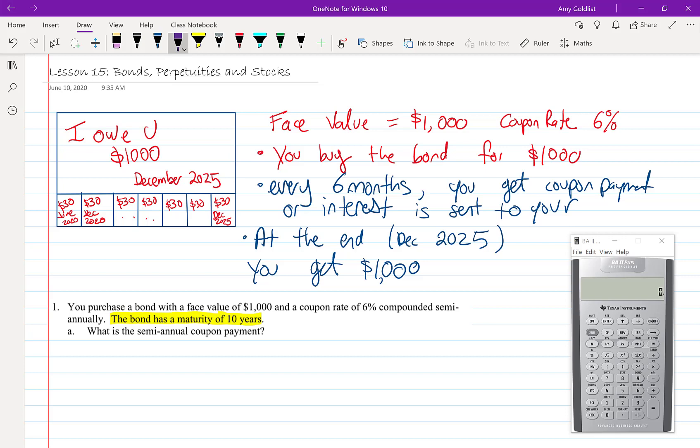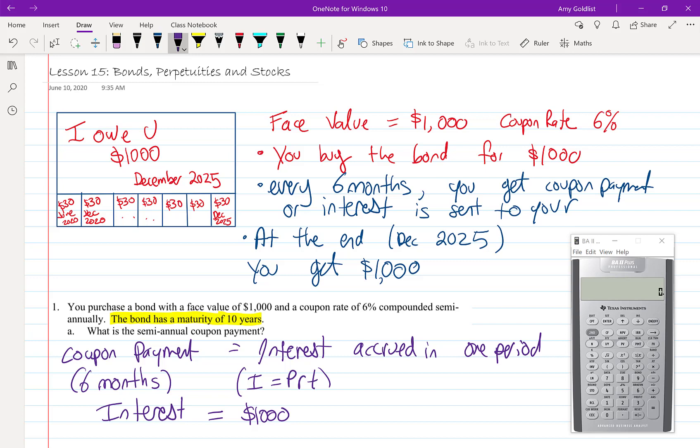What's the semi-annual coupon payment for this? We're just coming up with the interest after one half year, or the simple interest. The coupon payment is really the interest accrued in one period, or here it's going to be six months. Often bonds are semi-annual, so our interest here is going to be I = PRT. Our interest is the principal, that's $1,000, the rate is the periodic rate, 6% divided by 2, and T is six months or one half. That's 0.06 times a half, which is $30.